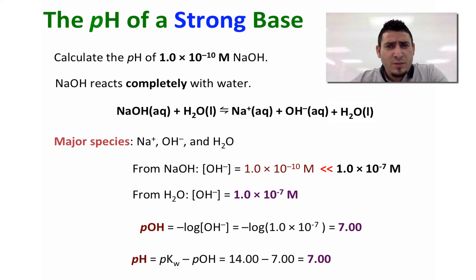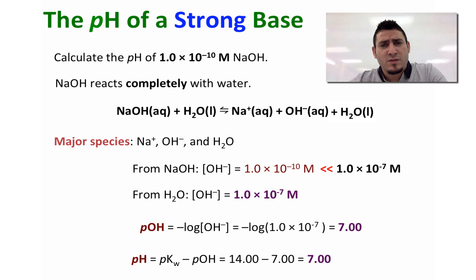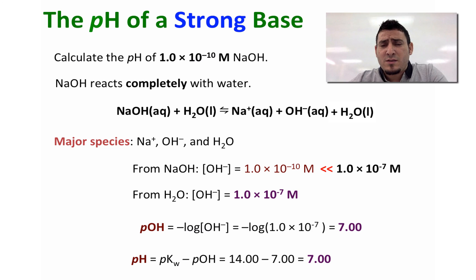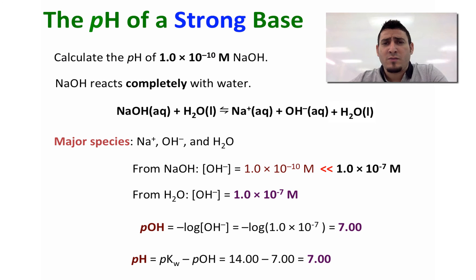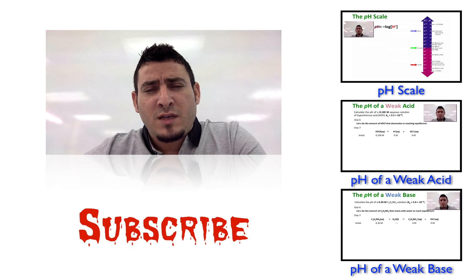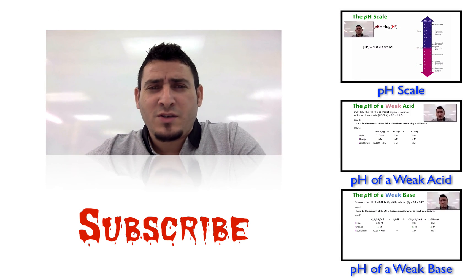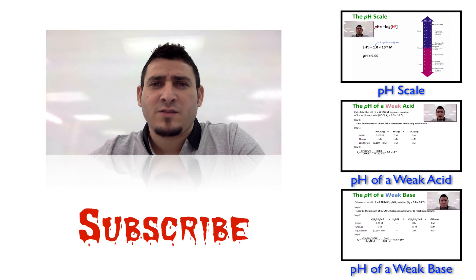When we calculate pH from pKw − pOH, we find that the pH is also equal to 7. Even though we added a strong base to the aqueous solution, since the concentration is very low, the pH remains unchanged and the solution stays neutral, characterized by pH = 7. I hope this video was helpful — please like, share, and subscribe, and I'll see you next time.